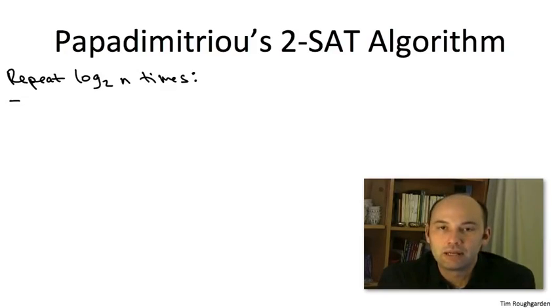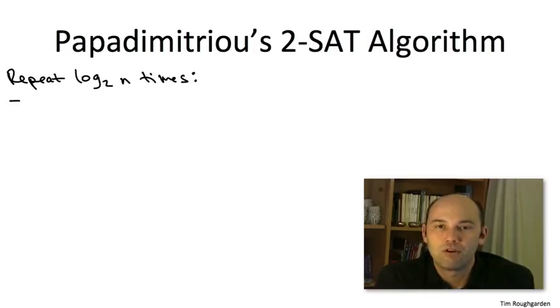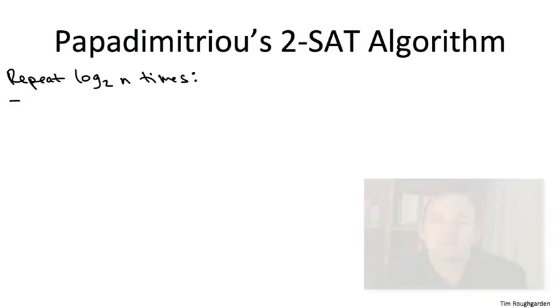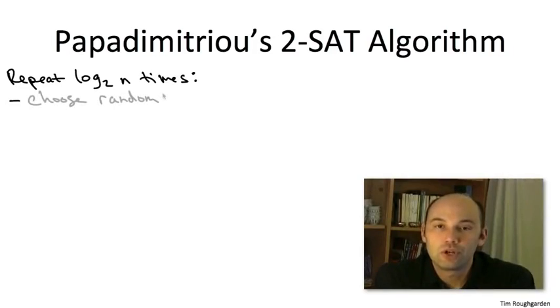That's just going to be the one we discussed. So two assignments will be neighboring if they differ only in the flip of a value of a single variable. We have to make a decision about where we start the local search. We're going to do it in just the obvious randomized way from a uniform at random assignment of the variables.